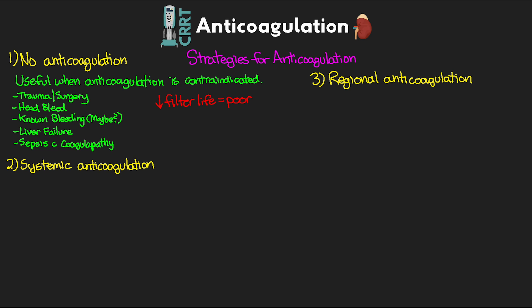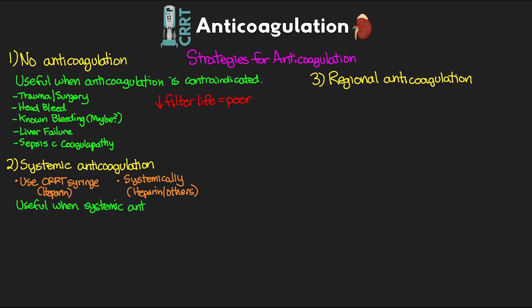For our systemic anticoagulation strategy, we're either going to anticoagulate our patient through the syringe pump on the CRRT machine with heparin, or give it systemically to the patient with heparin or other drug options. This strategy is often useful in patients who already require systemic anticoagulation, such as patients with mechanical heart valves, DVT, or PE — where we're going to need systemic anticoagulation anyway and the CRRT filter just benefits from that.